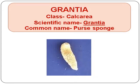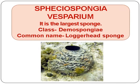Grantia. Class Calcarea. Scientific Name: Grantia. Common Name: Perth Sponge. Speciospongia vesparium — it is the largest sponge. It belongs to Class Demospongiae. Common Name: Loggerhead Sponge.